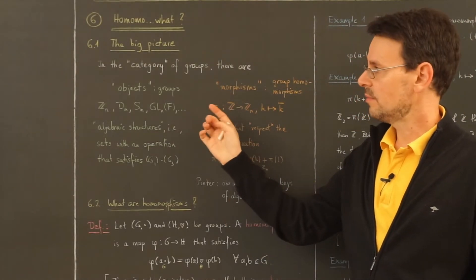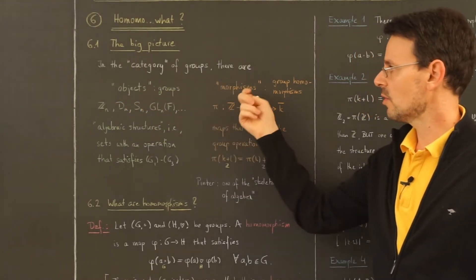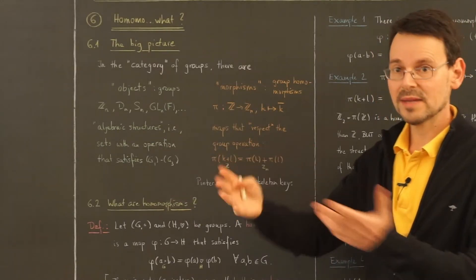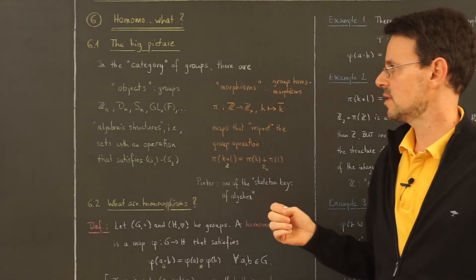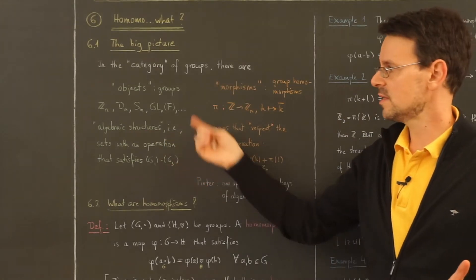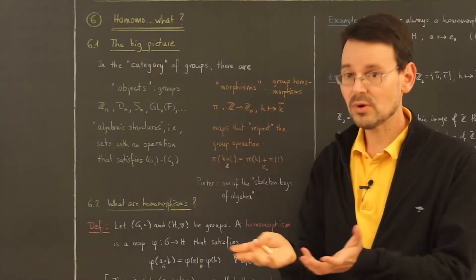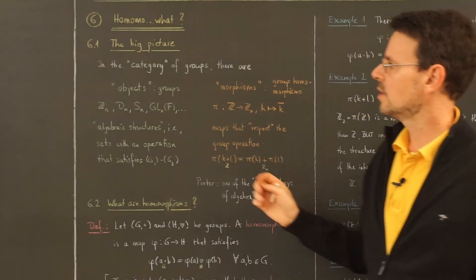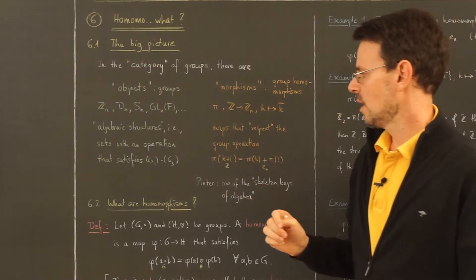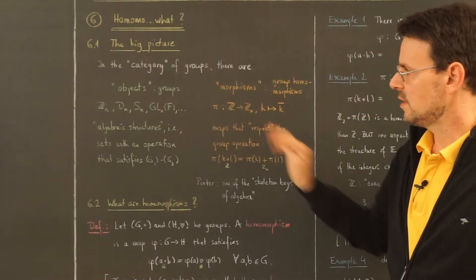What other categories are there? If you know about vector spaces as objects, the morphisms would be the linear maps or linear transformations — they respect the linear structure of the vector space. Or if you're in the category of topological spaces, you would have the continuous maps respecting the topological structure. This is a whole field of math called category theory, which I'm not going to touch here, but it's nice to see these two aspects of studying groups.